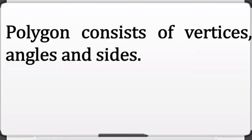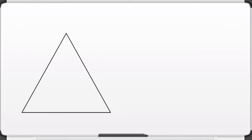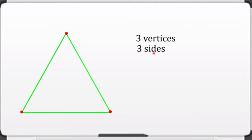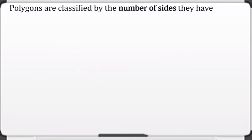As we all know, a polygon consists of vertices, angles, and sides. Let us have this polygon. This polygon has one, two, three vertices, one, two, three sides, and one, two, three angles. Now let us classify polygons by the number of sides they have.